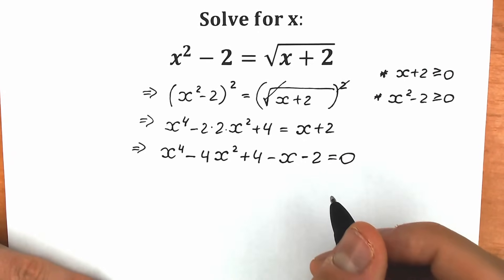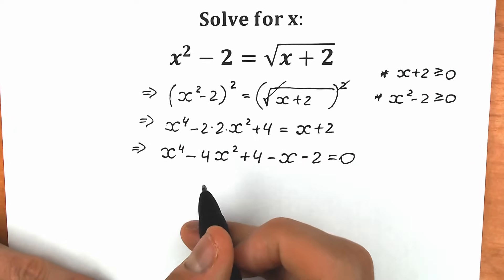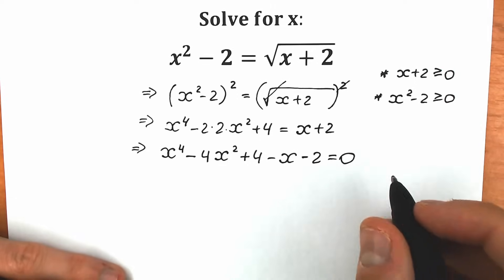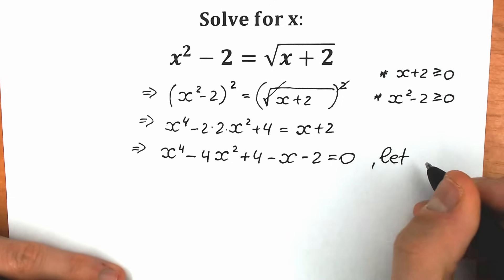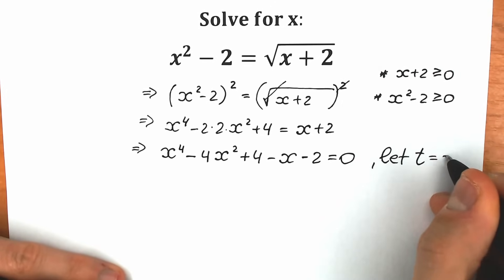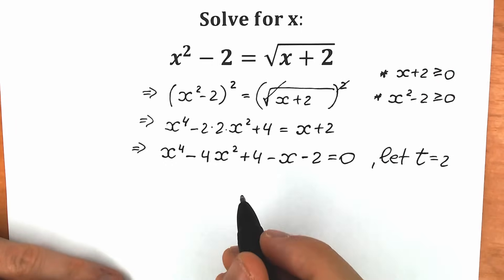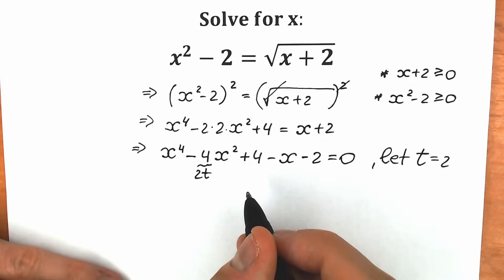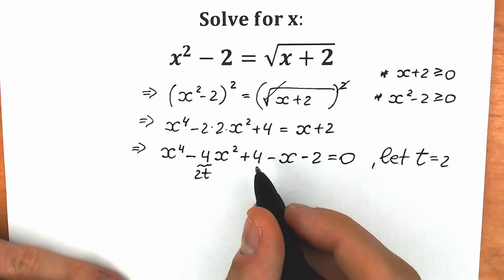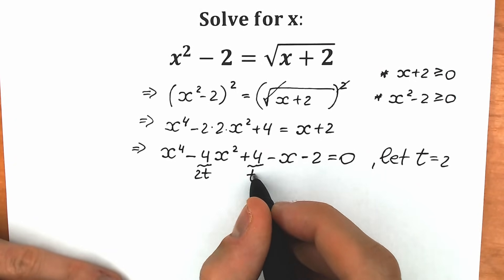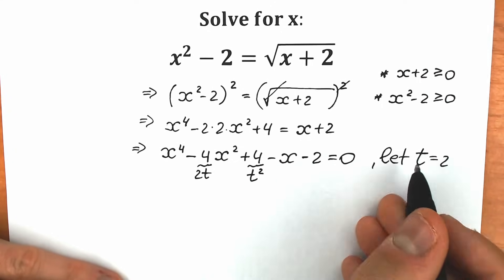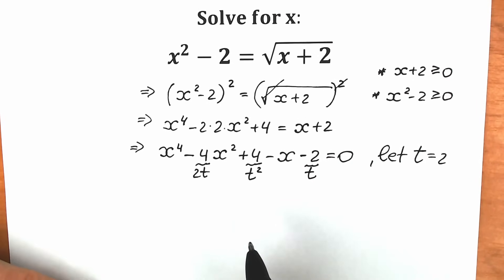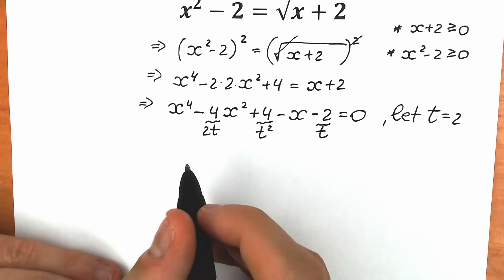A lot of students are confused about how to solve this with the fourth power — maybe substitution? I'm going to show you a really great trick: a really interesting substitution. Let t equal 2. With t equal to 2, the constant 4 becomes t squared, the coefficient 4 in front of x squared becomes 2t, and the standalone 2 becomes t. This is a very tricky substitution, but it helps us a lot — you'll see in a few seconds that it's extremely useful.